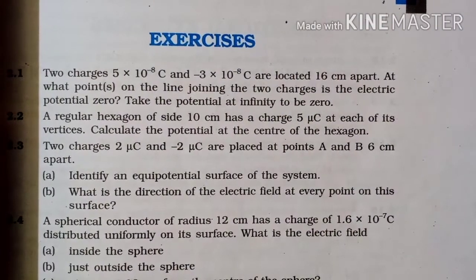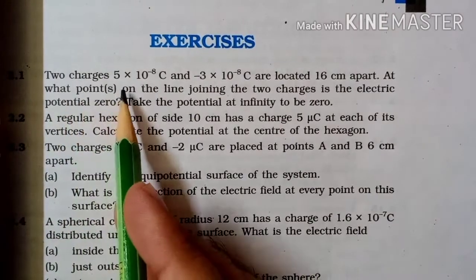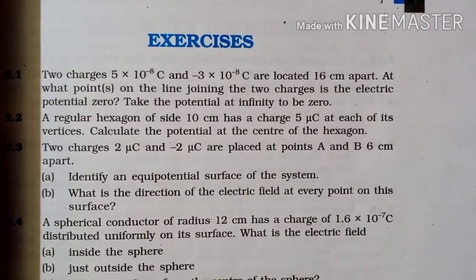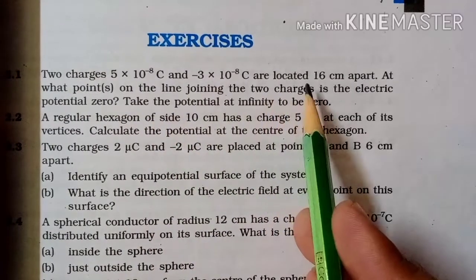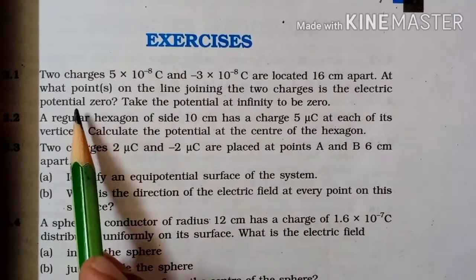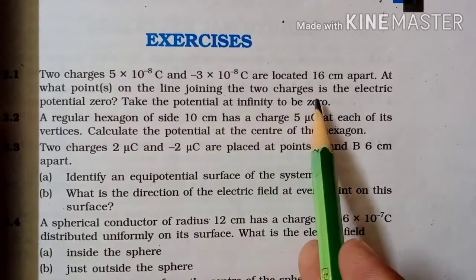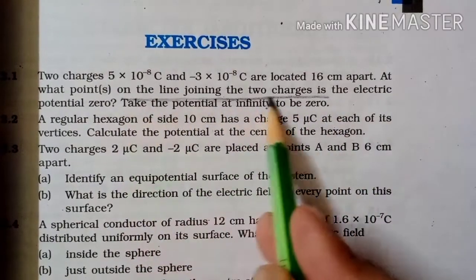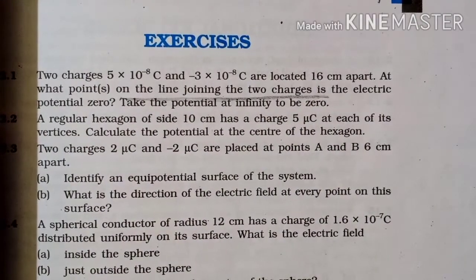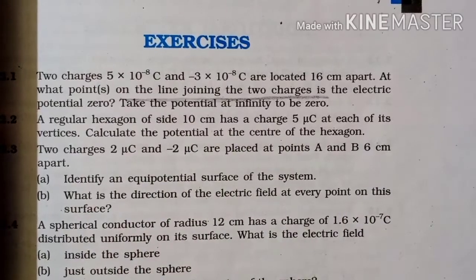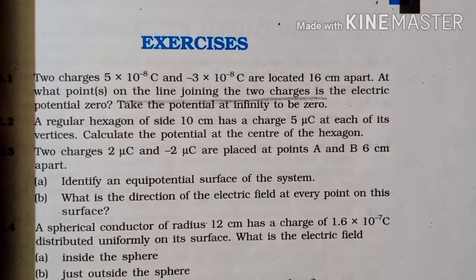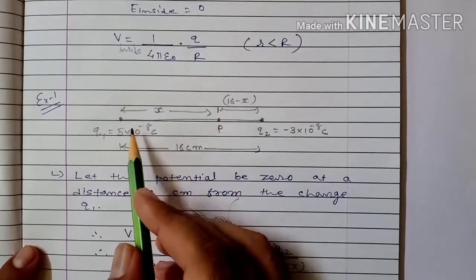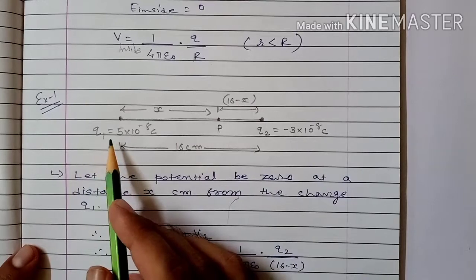Now we will solve Exercise Numerical 2.1. Two charges — 5×10⁻⁸ C and −3×10⁻⁸ C — are located 16 cm apart. At what points on the line joining the two charges is the electric potential zero? (Take the potential at infinity as zero.) Since potential is a scalar quantity, we will get zero potential only when both charges are opposite, and here opposite charges are given.